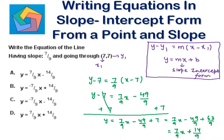Since 63 is bigger, 14 will be positive. So we have the equation y equals 7/9x plus 14/9, which is the answer in part D. We can highlight that.